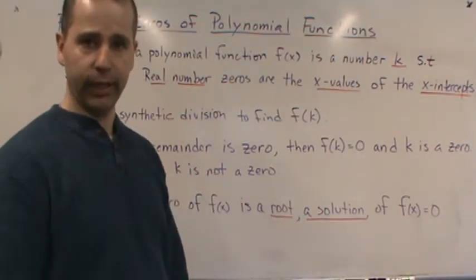If you have real number zeros, if your zeros are real numbers, then those correspond to the x values of the x-intercepts where the graph crosses the x-axis.